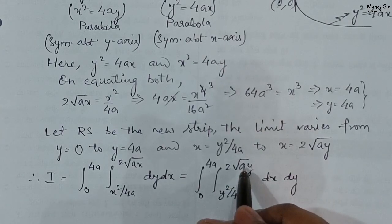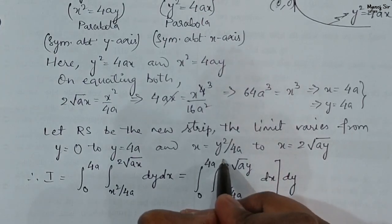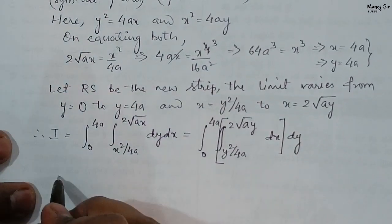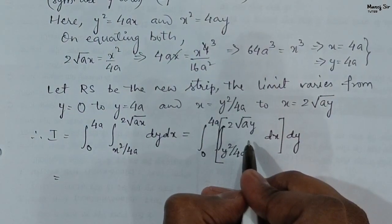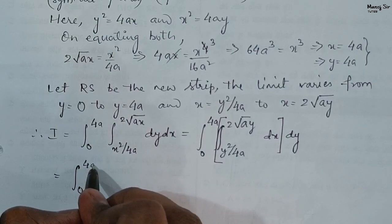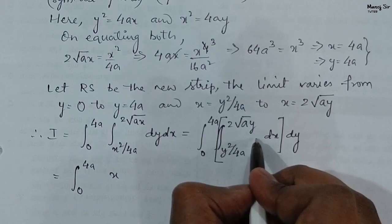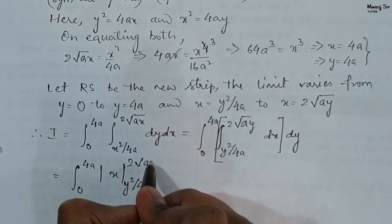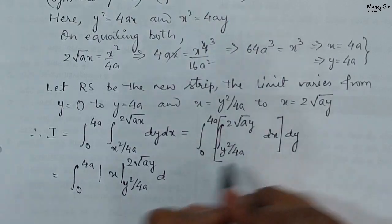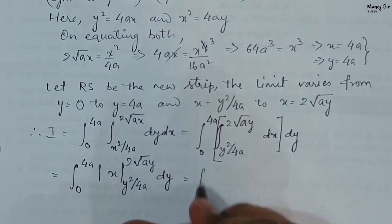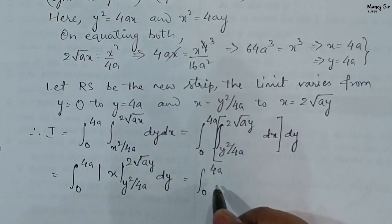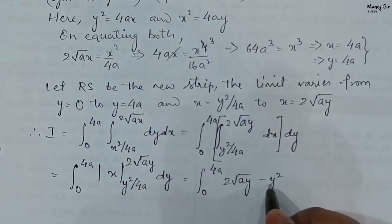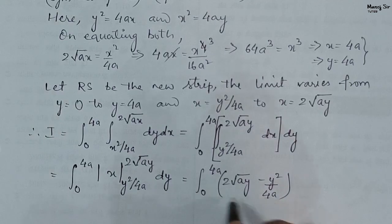We integrate 1 with respect to x first. This gives [x] from y² / 4a to 2√(ay), integrated over y from 0 to 4a. Applying the limits, we get ∫₀^{4a} (2√(ay) − y² / 4a) dy.